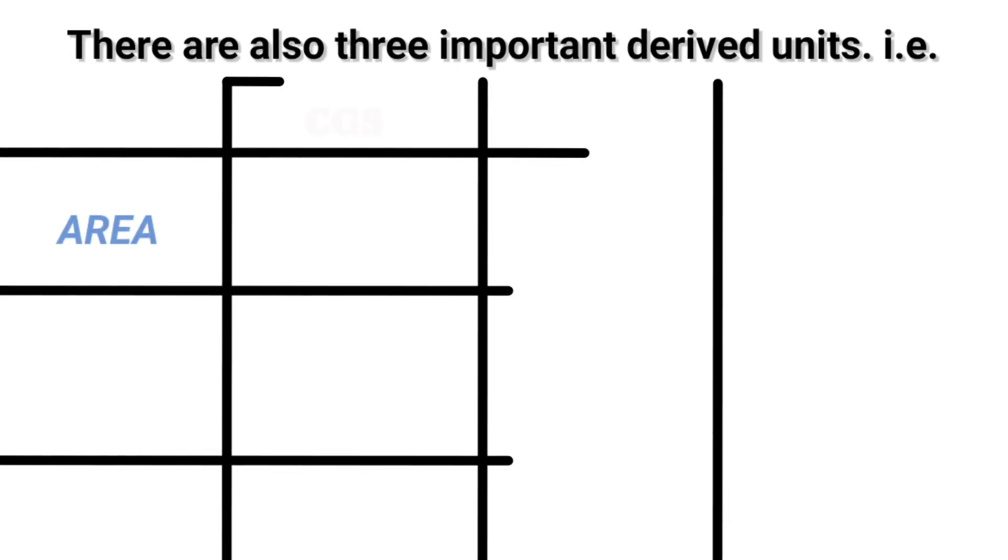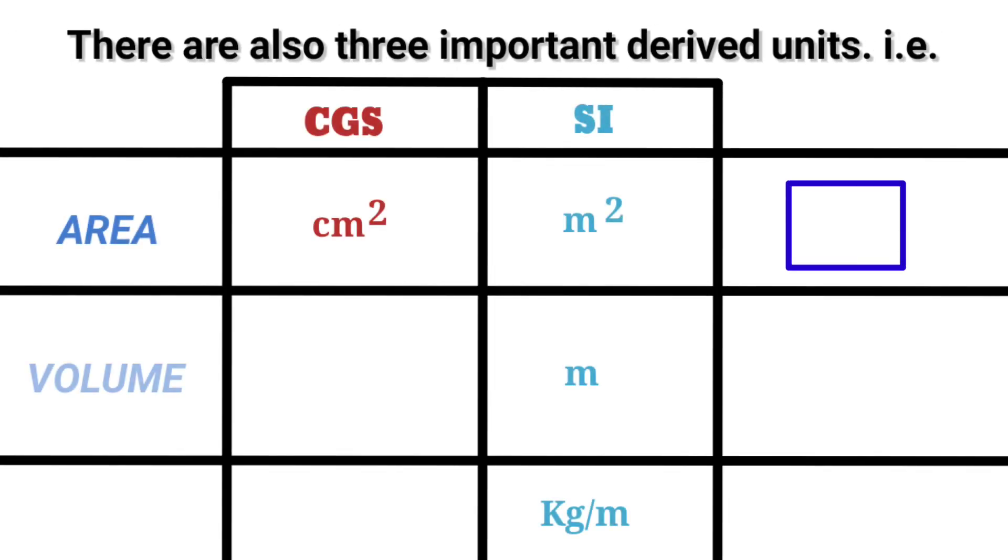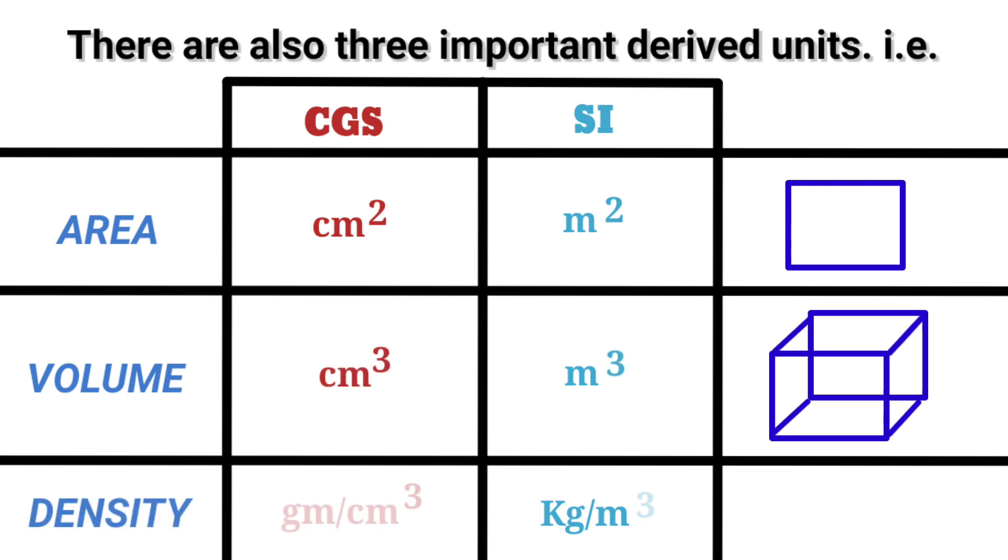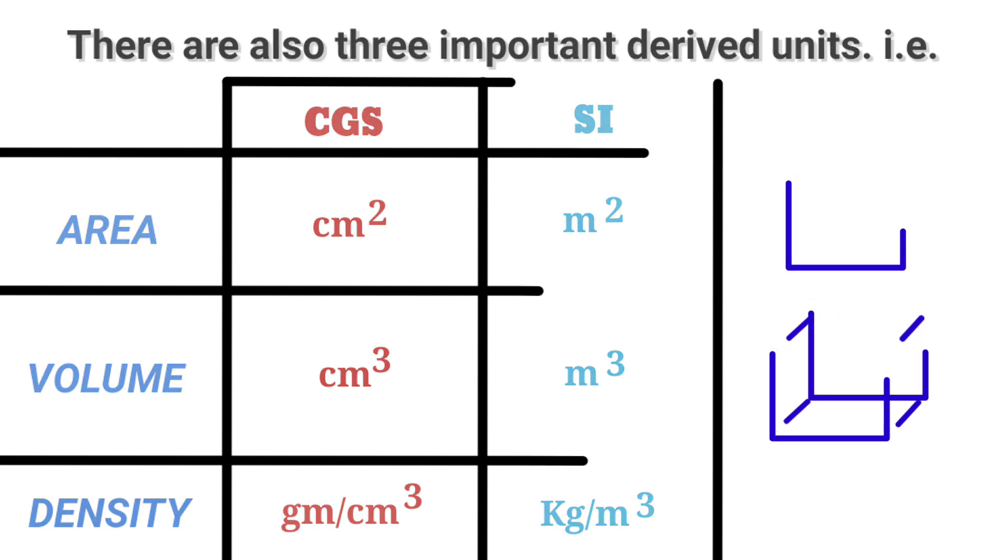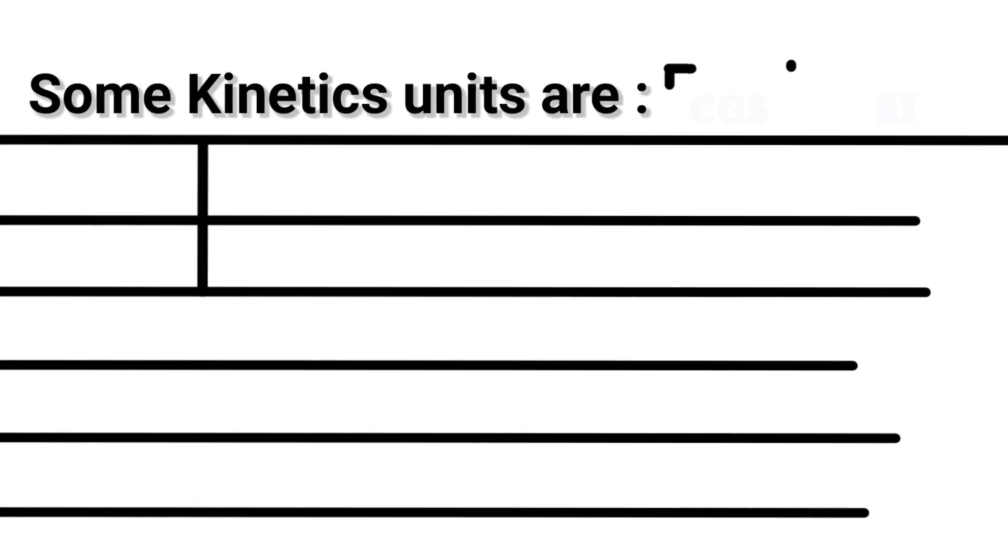There are also three important derived units which are area: CGS centimeter square, SI meter square; volume: centimeter cube, meter cube; density: gram per centimeter cube, kg per meter cube.